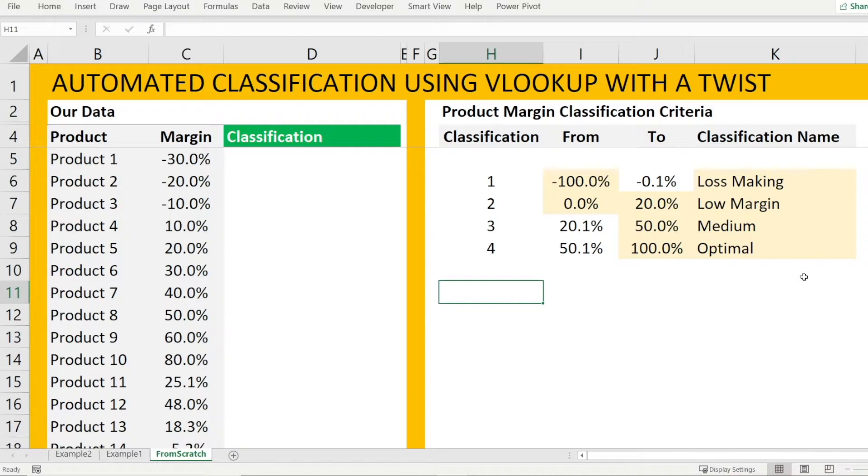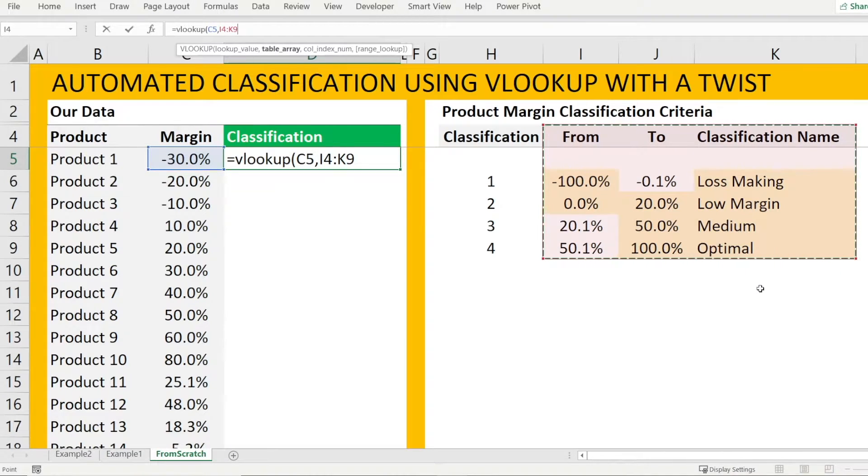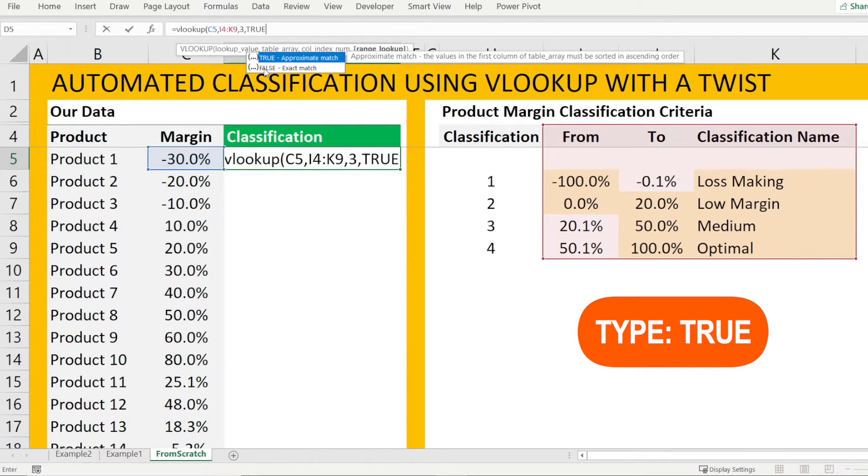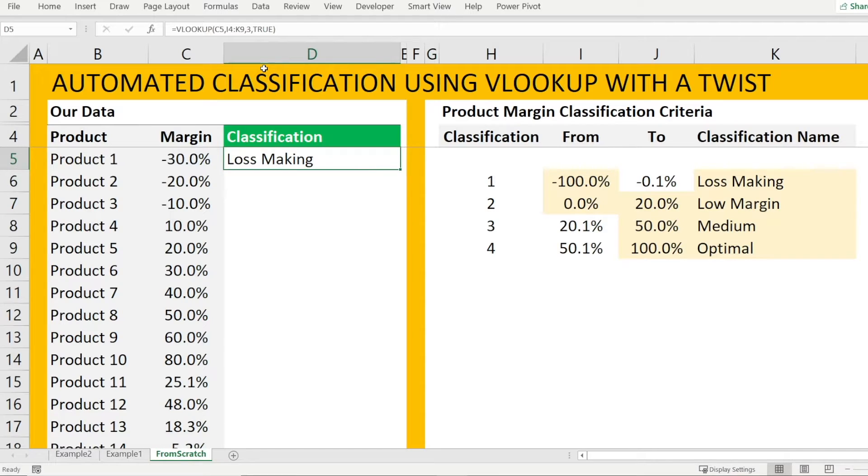Now that the product margin classification has been set up, let's move on to using VLOOKUP with a twist to link up the margin with the classification criteria. So select the range and type the column that we need to return, which is the classification name. So that's the third column one, two, three. And then, now previously, we often use exact match when using VLOOKUP. So we would type false. But in this instance, let's try type true, which is looking for approximate match. And that's the twist.